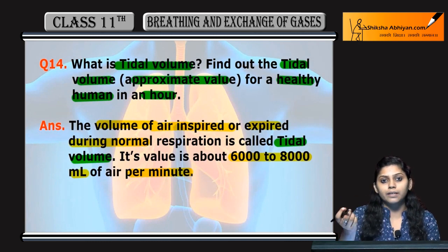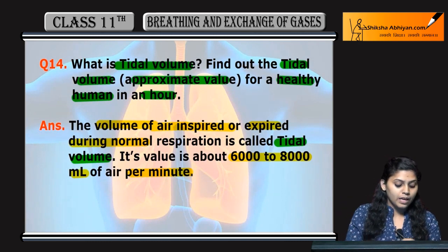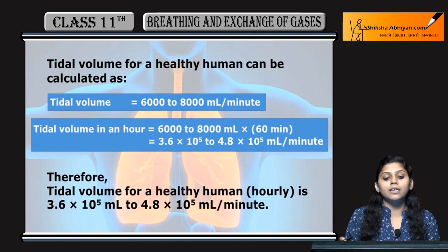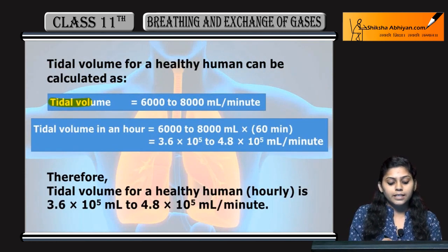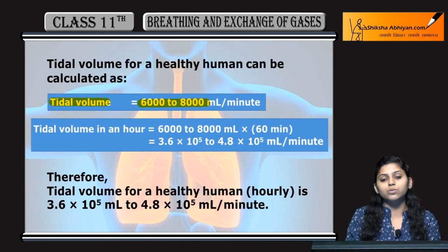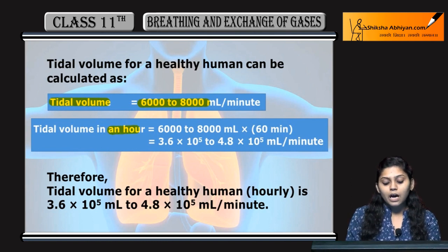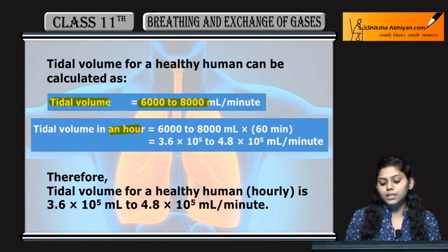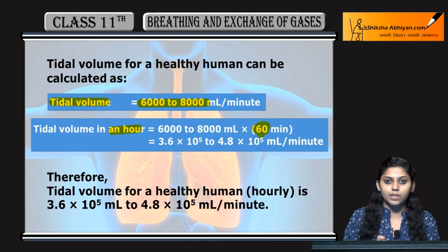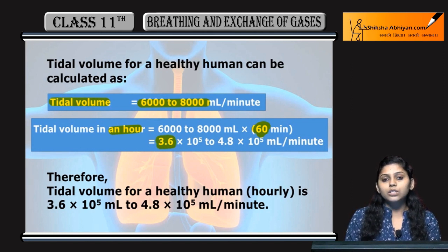Now let's see how much that is hourly. Tidal volume is 6,000 to 8,000 ml per minute. To find the value per hour, we multiply 6,000 to 8,000 ml by 60, since there are 60 minutes in one hour. So approximately the value becomes 3.6×10⁵ to 4.8×10⁵.